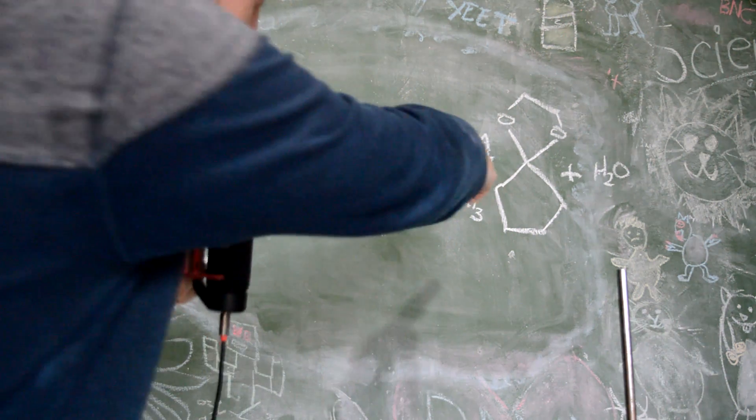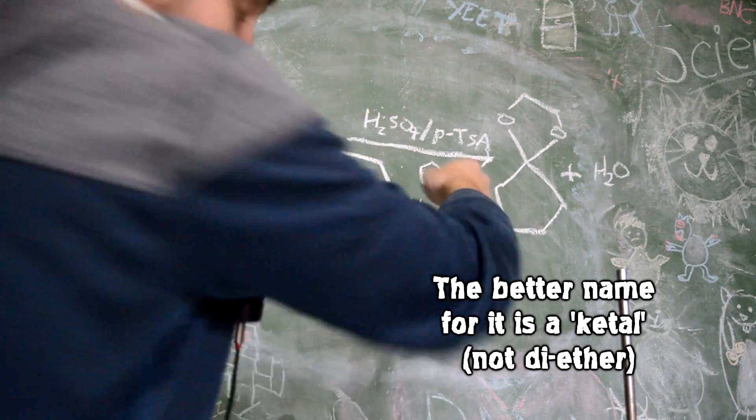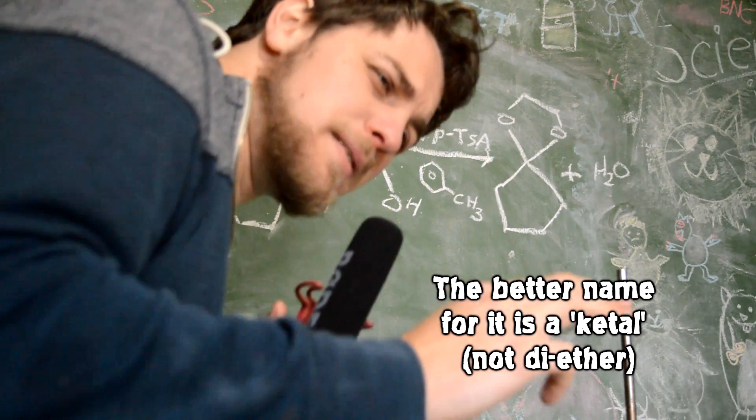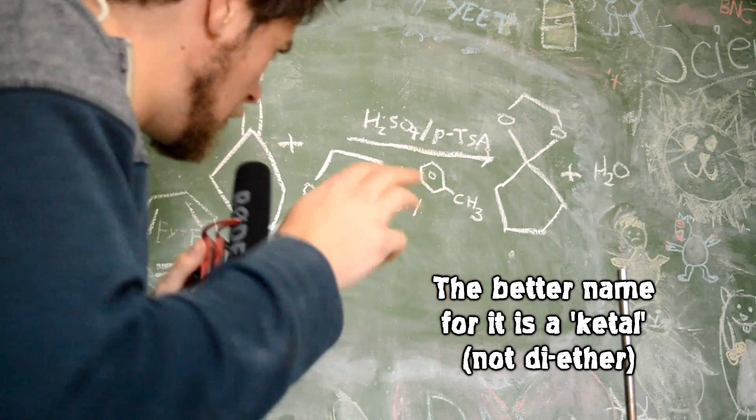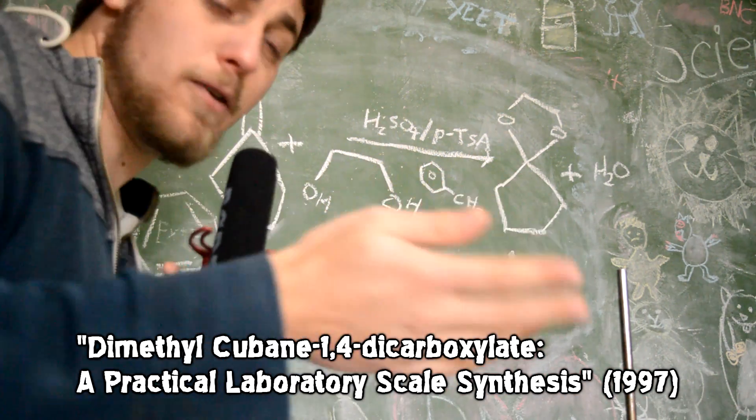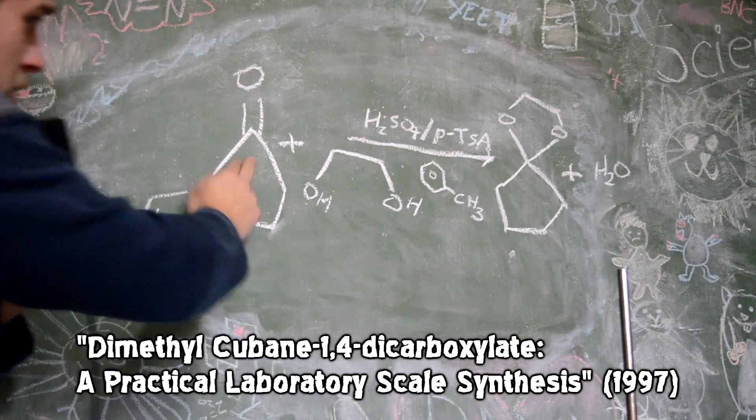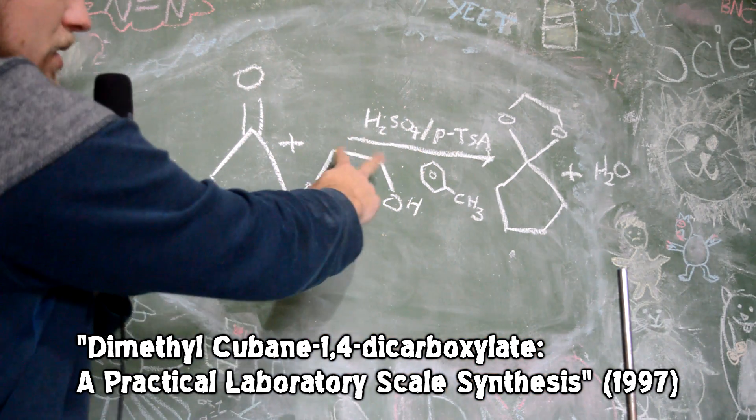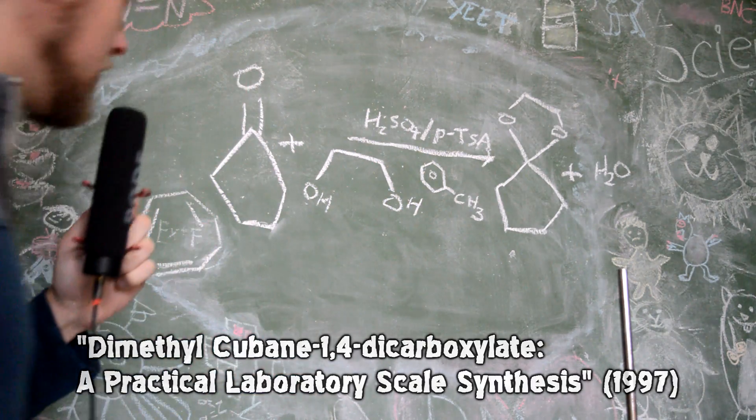Our task today is to make that diether at the end there. This is our end product, and it's a reasonably simple reaction. We're copying it basically directly from our text with a few changes. We're reacting this ketone here with ethylene glycol, which is two carbons with two alcohol groups on the end of it.